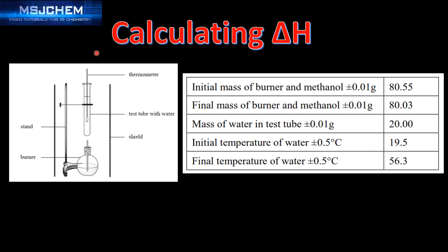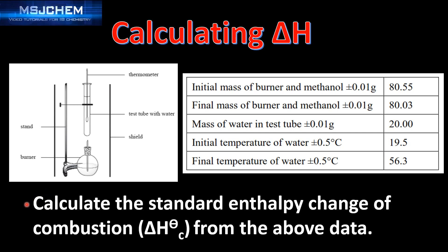In our next example we're going to calculate the enthalpy change of combustion for methanol — the enthalpy change when one mole of methanol is burned in excess oxygen. In our results table we have the initial and final mass of the burner and the methanol using a spirit burner, the mass of the water in the test tube, and the initial and final temperature of the water.